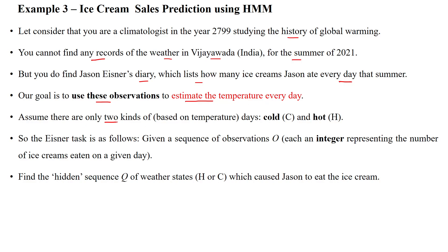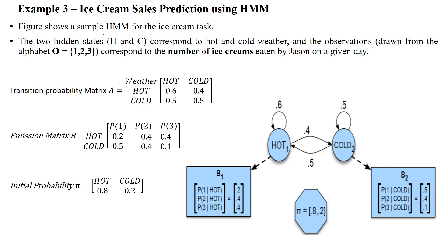Assume there are only two kinds of days — two kinds of climates: either cold or hot. The task is as follows: given a sequence of observations, those observations are denoted with an integer representing the number of ice creams consumed by Jason on a given day, find the hidden sequence of weather states — either hot or cold — which caused Jason to eat the number of ice creams on a particular day based upon the climate. For this we will take a sample Hidden Markov Model for the ice cream task.